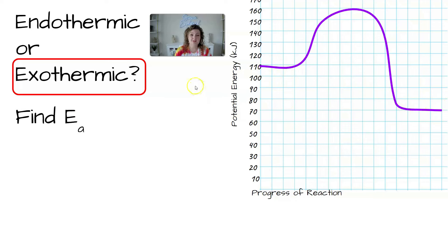So let's find our activation energy. Remember, you're going to start from your reactants and go straight up to the top. And this is where the line is. So we can go straight over and we can see we have 160 kilojoules minus 110. So that is going to give us 50 kilojoules for the activation energy.